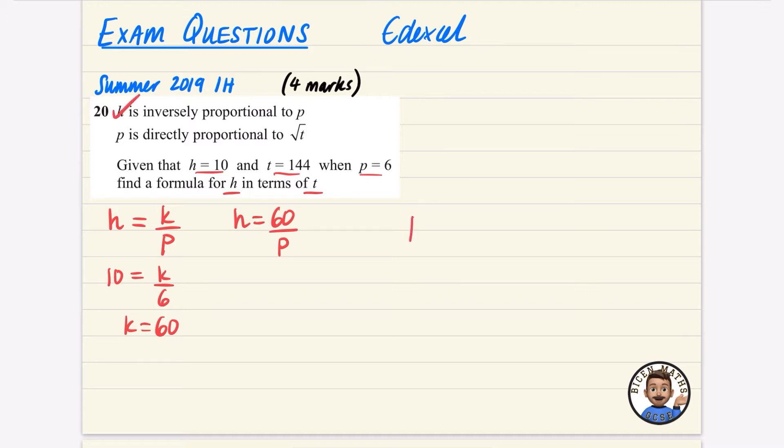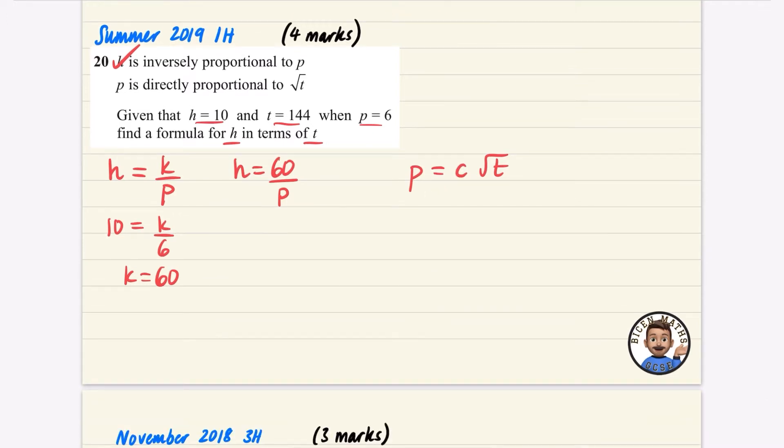It then says that P is directly proportional to the square root of T. Now, I'm actually not going to use the letter K, because I've already used the letter K earlier on. But if you did, it's not going to be a problem. Instead of using the letter K, I'm going to use the letter C, just because it's another letter that we often use for a constant.